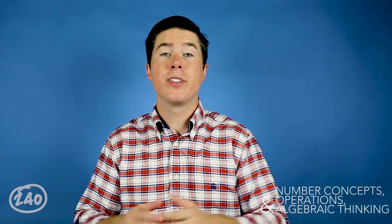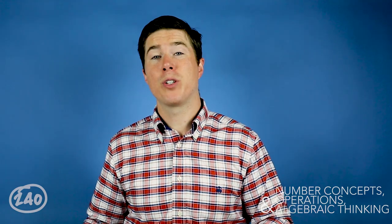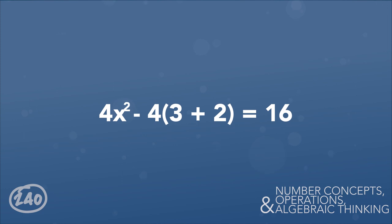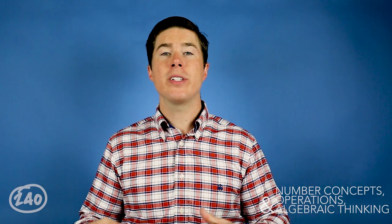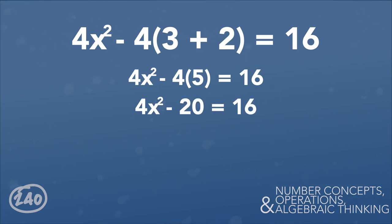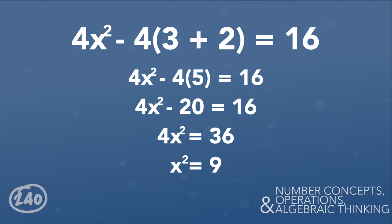The next concept is solving for x. The test will give you an equation and you have to solve for x. For example: 4x² − 4(3+2) = 16. You balance the equation to isolate x, progressing through steps: 4x² − 4(5) = 16, then 4x² − 20 = 16, then 4x² = 36 (adding 20 to both sides), then x² = 9 (dividing both sides by 4), and finally x = 3 (taking the square root of 9).